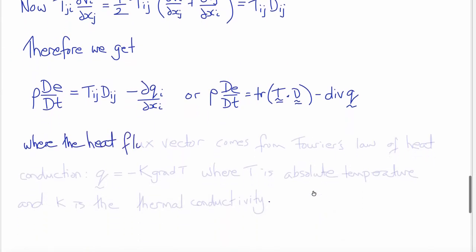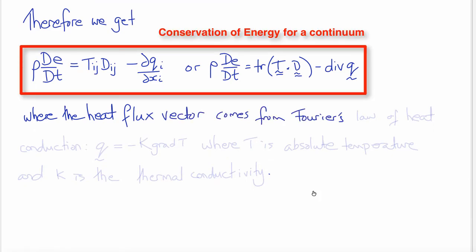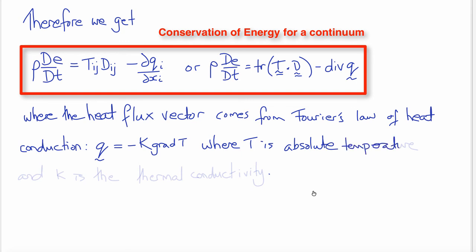The heat flux vector comes from Fourier's law of heat conduction, which states that Q equals minus K times the gradient of the temperature T, where T is the absolute temperature and K is the thermal conductivity.